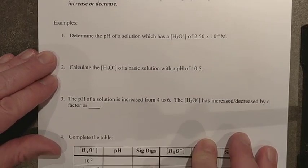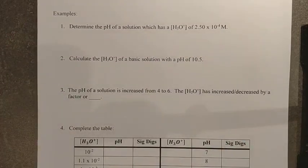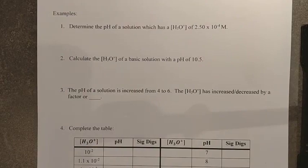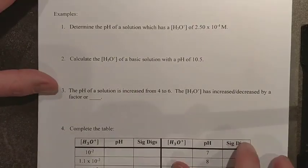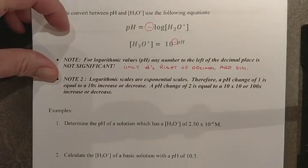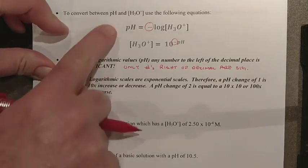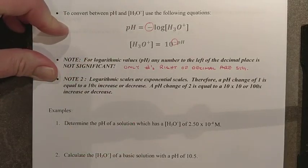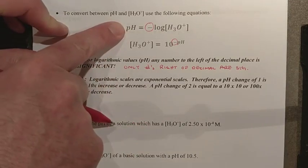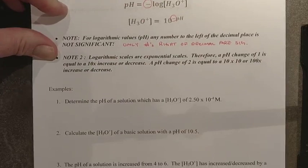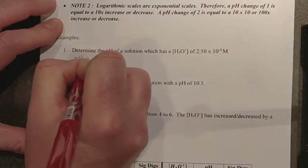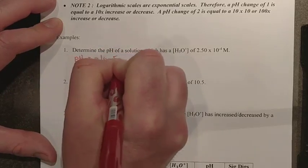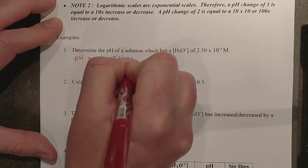Let's go through two quick examples. We want to determine the pH of a solution that has a hydronium ion concentration of 2.5 times 10 to the negative 4 molar, which means moles per liter. You go back to your formula — the one for pH given concentration: pH equals the negative log of the hydronium ion concentration. So we write: pH = -log[H₃O⁺] = -log(2.50 × 10⁻⁴ mol/L).